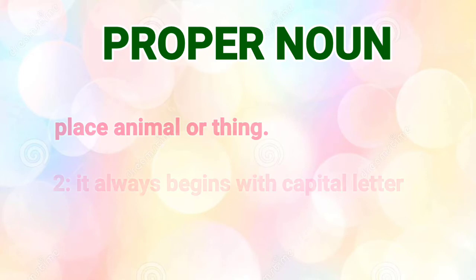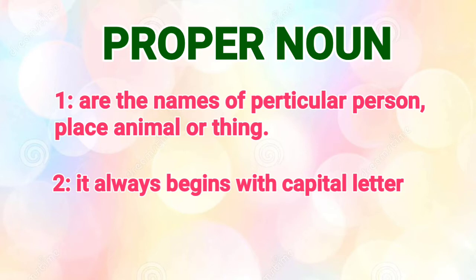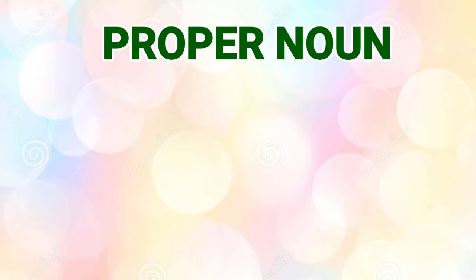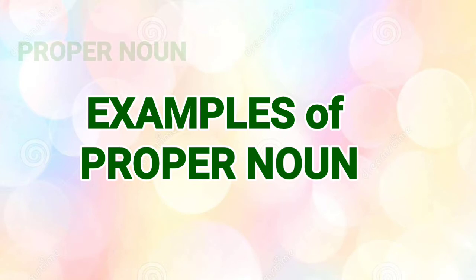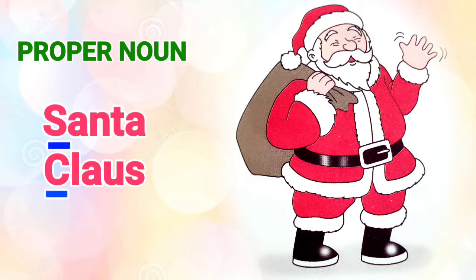Now, proper nouns are the names of particular people, places, or things. Another important thing to remember is that a proper noun always begins with a capital letter. For example, Santa Claus — Santa Claus always starts with capital S and capital C. It's the name of a particular person. If you indicate him as a common noun, he is a man, and the name given to that particular man is Santa Claus.